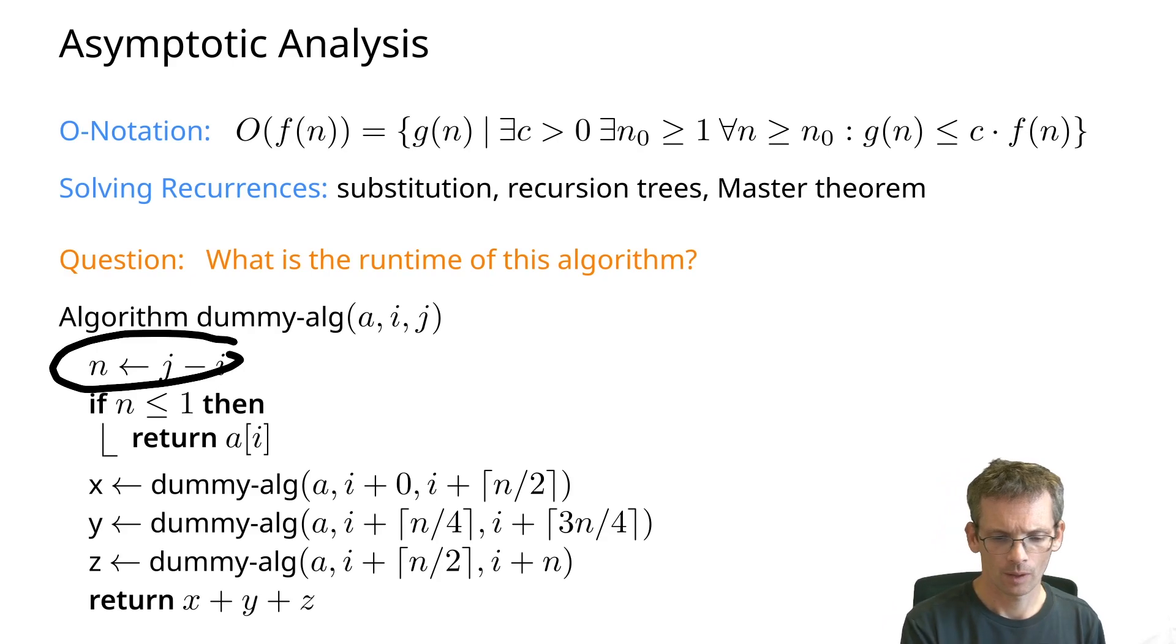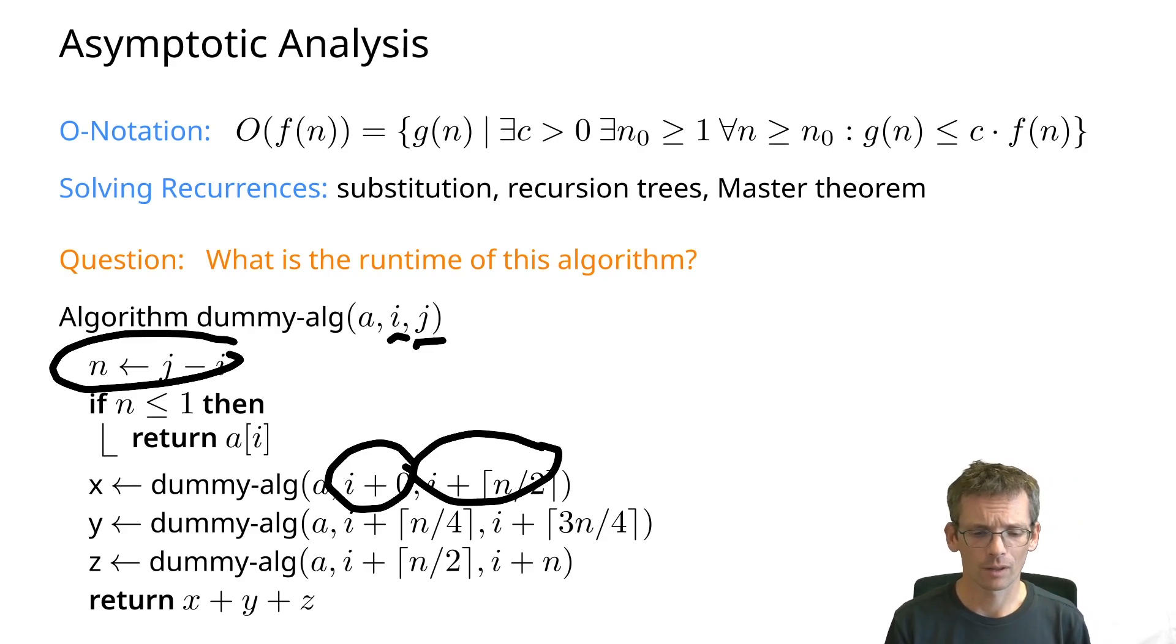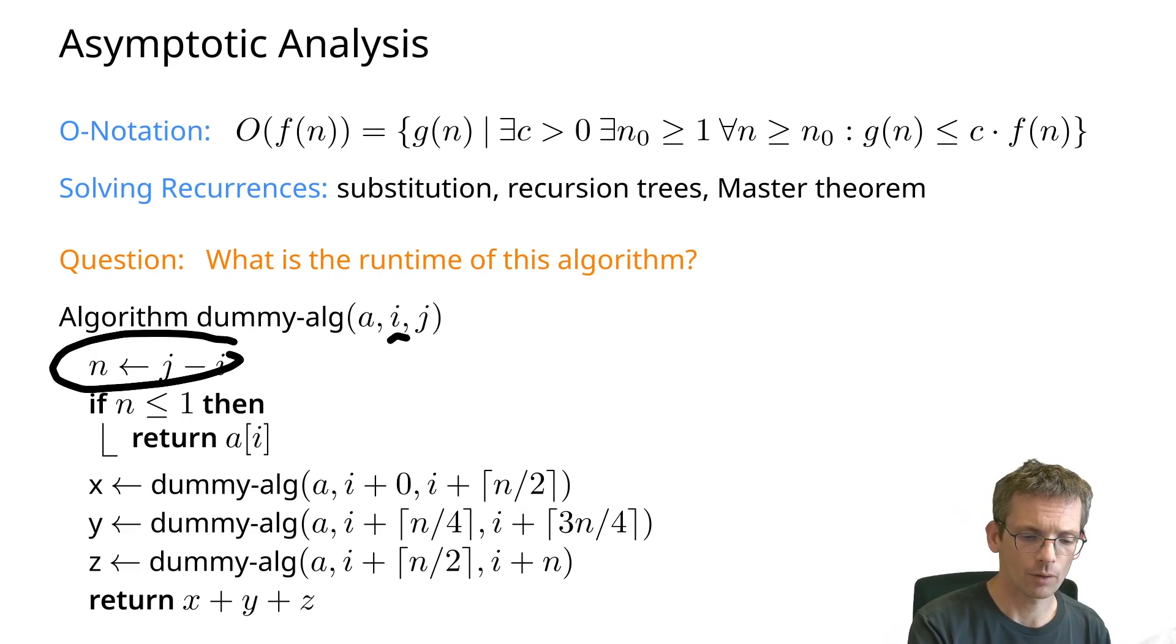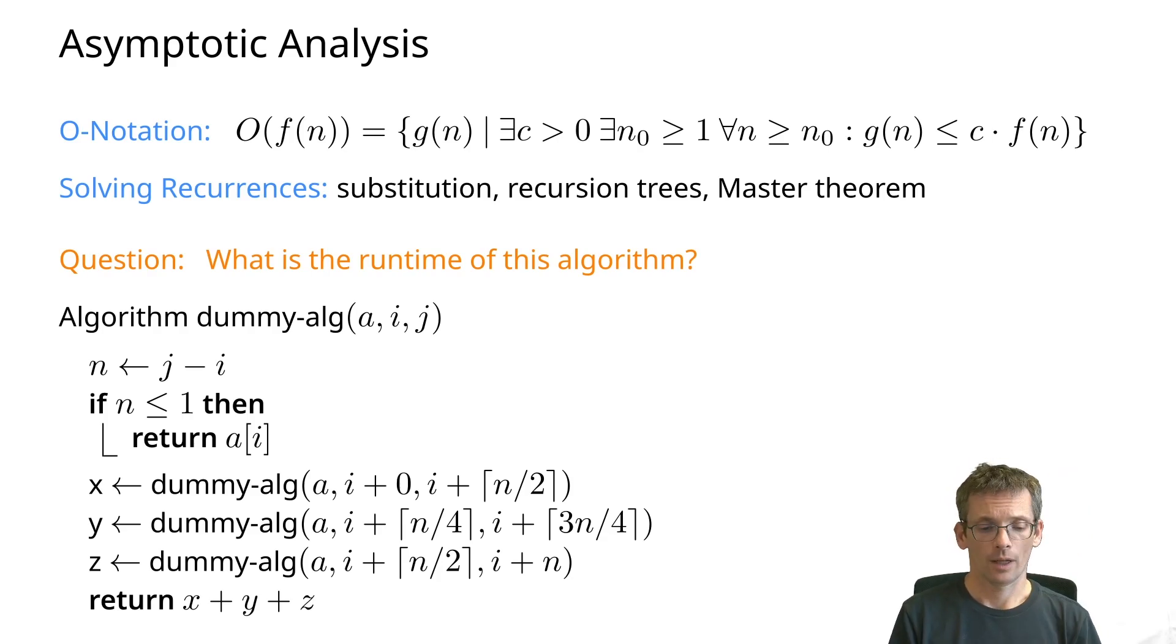So here we have i and j, and for instance, in this first recursive call, i plus zero, so i takes the role of i, and i plus n/2 takes the role of j. So this is a recursive call on a sub-problem of size n/2. Now have a look at this algorithm and analyze its running time. Let's start with what is its recurrence.